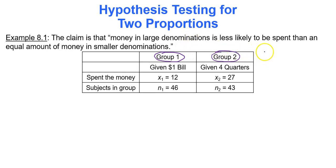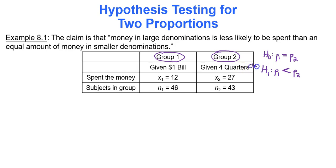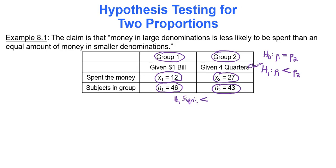Group one was given a dollar bill and group two was given four quarters. The null hypothesis is that the proportion that spent the money in group one equals the proportion in group two. The alternative hypothesis is that the proportion that spent in group one is less than in group two. The claim is the alternative hypothesis. We input x1 = 12, n1 = 46, x2 = 27, n2 = 43, and the alternative sign is less than.